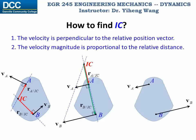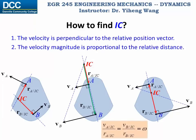The third case is similar. Again, these two velocity vectors are parallel to each other, and the instantaneous center of zero velocity must be on the line that is perpendicular to both of them. And if at the same time you also know the magnitudes of these two velocities, then you can determine the exact location of the instantaneous center through similar triangles. In either case, the ratio between the velocity magnitude and the relative distance from the instantaneous center is omega, the angular velocity magnitude of this rigid body.